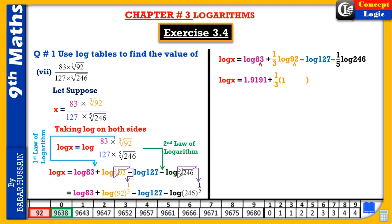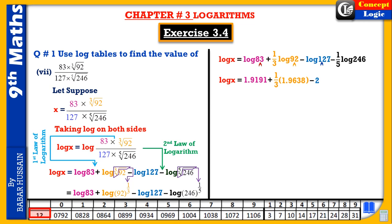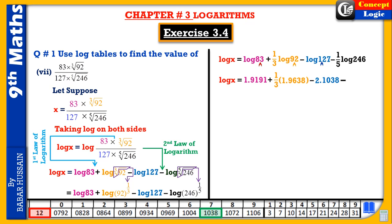For minus log 127: the point of reference to the decimal position shows two digits, so the characteristic is 2. The mantissa from the log table is 1038. Minus (1/5) log 246: we find its characteristic next.